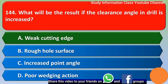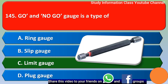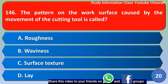Next question: A go and no-go gauge is a type of — Option A: ring gauge, Option B: slip gauge, Option C: limit gauge, Option D: plug gauge. The correct answer is Option C, limit gauge.